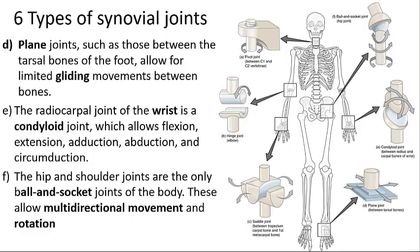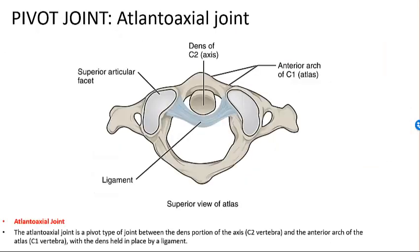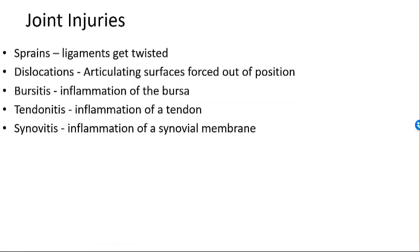A plane joint, also known as a gliding joint, has flat articular surfaces that allow only short gliding movements — the sacroiliac joint is an example. A condyloid joint, also known as an ellipsoid joint, has an oval articular surface of one bone fitting into a complementary depression in another — the radiocarpal joint is an example. The ball-and-socket joint has the spherical end of one bone articulating with a cup-like socket on the other bone — shoulders and hip joints are examples, and they allow the greatest range of motion but are rather unstable.